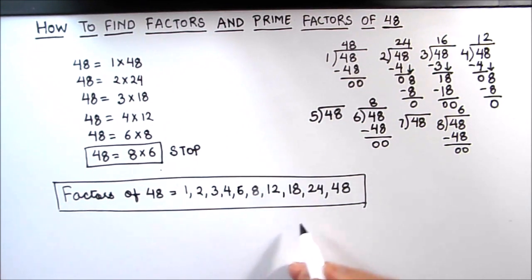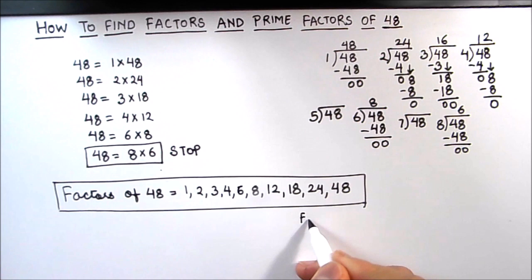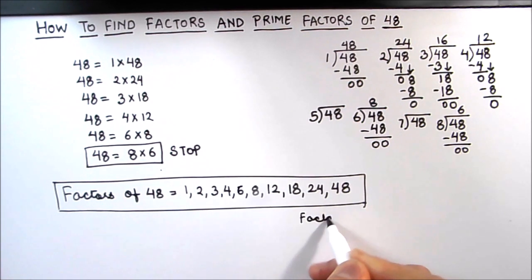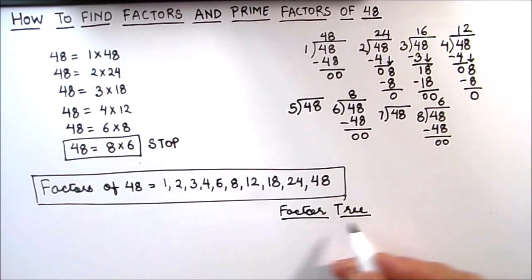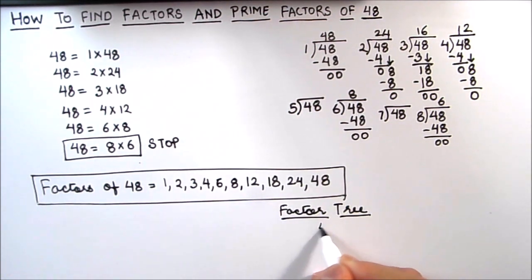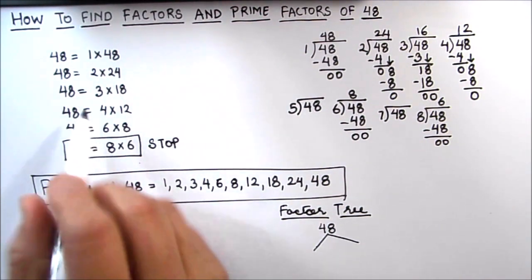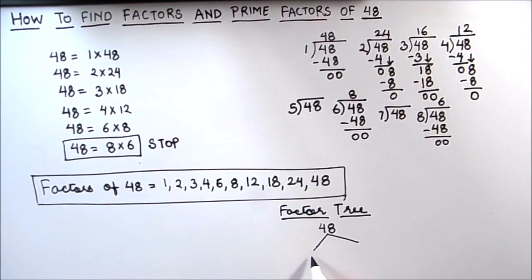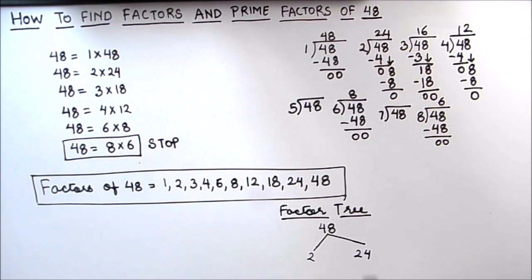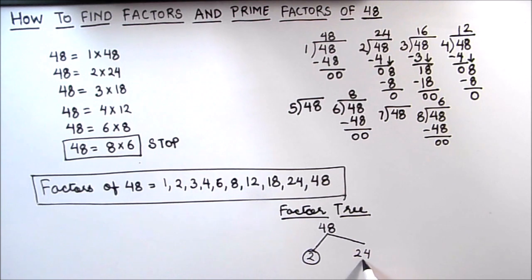For finding the prime factors we are going to use the factor tree. For making the factor tree we are going to write the number 48 and express it as the product of any two factors. Let's take 2 and 24, so 2 times 24 is 48. As 2 is a prime number, we are going to circle 2.